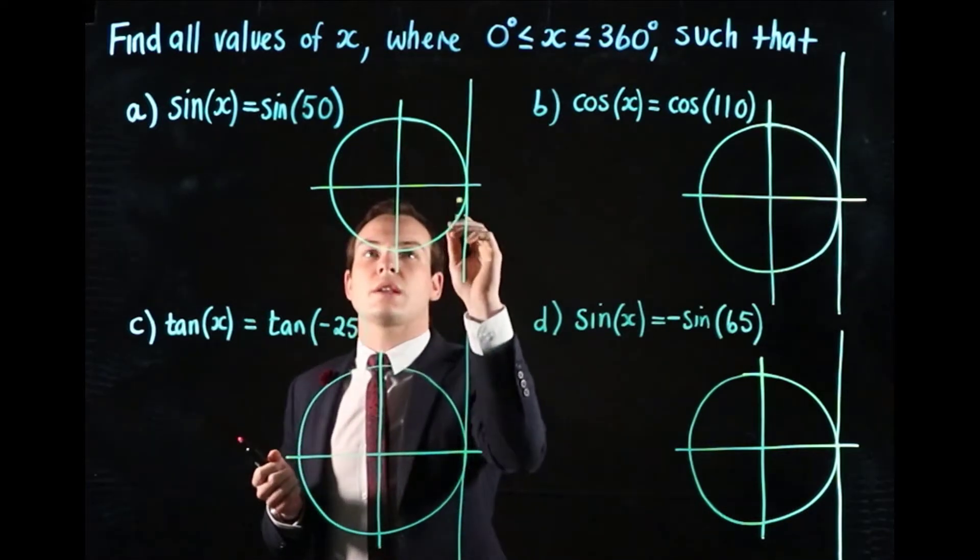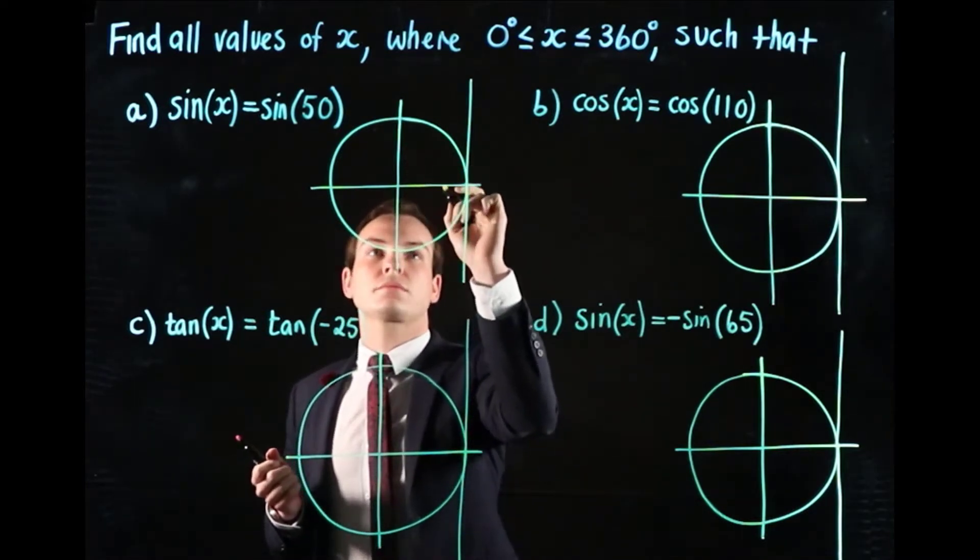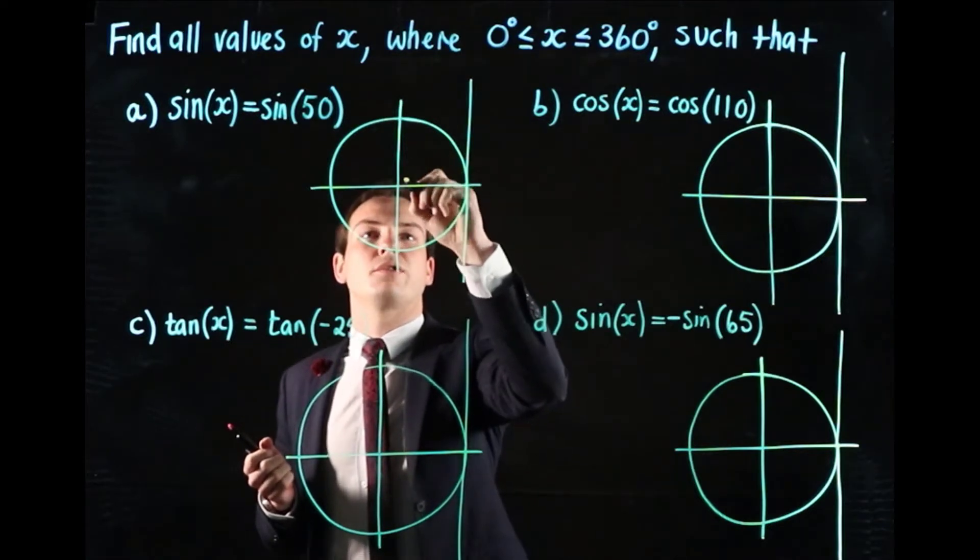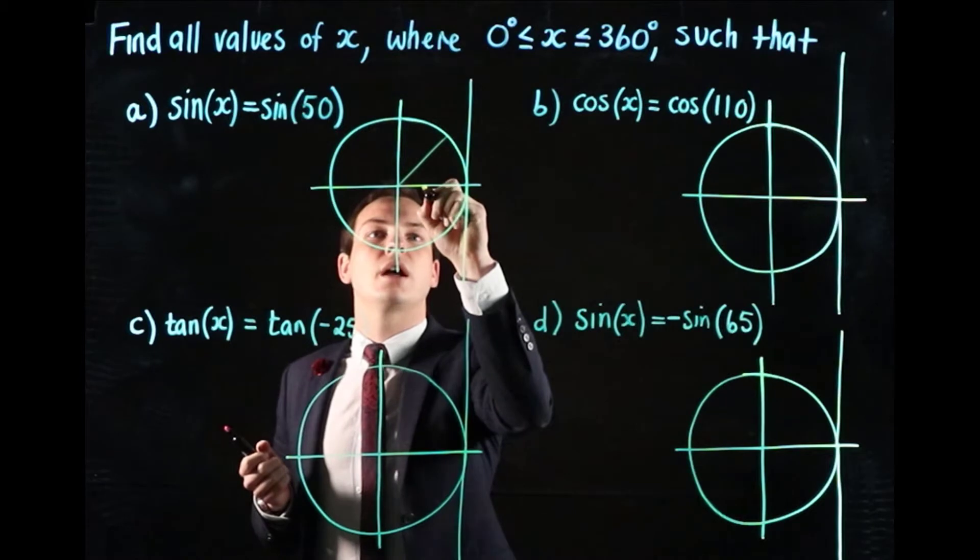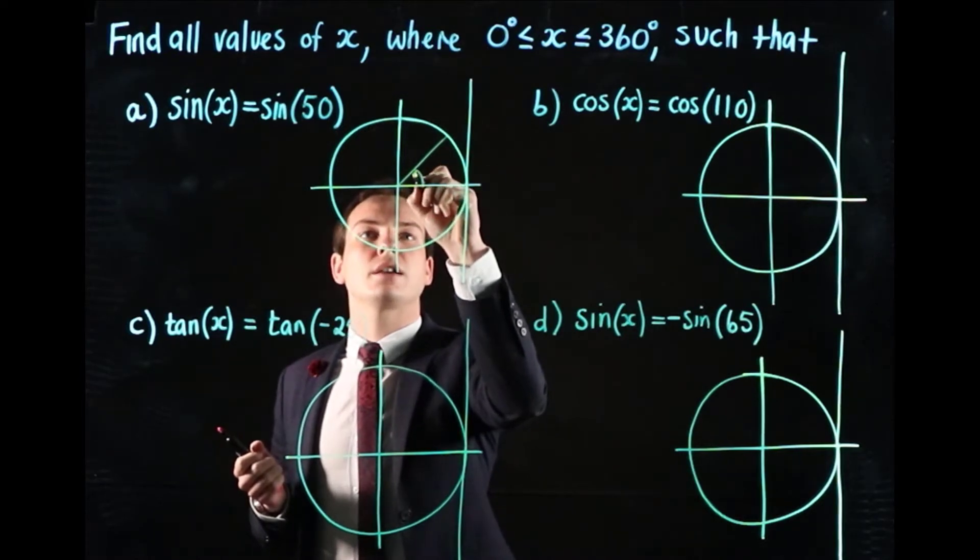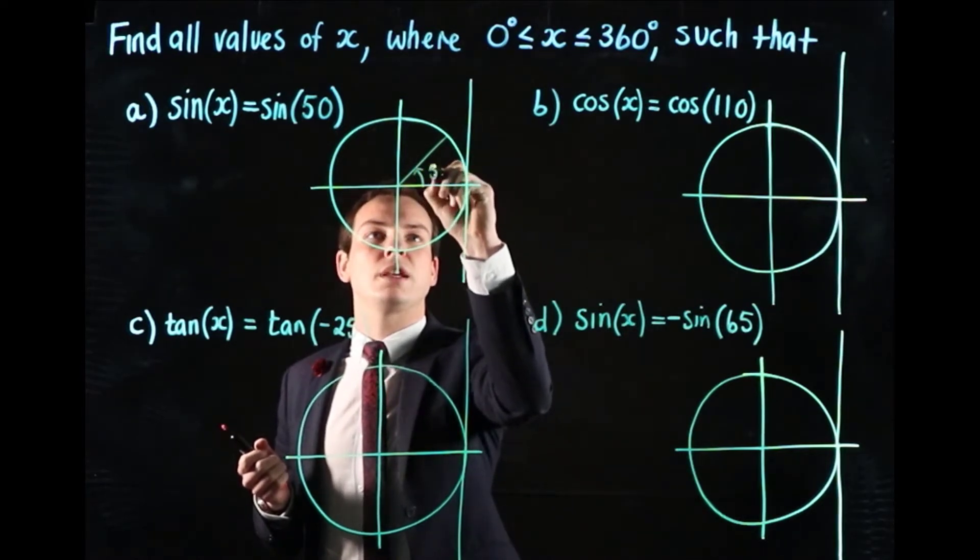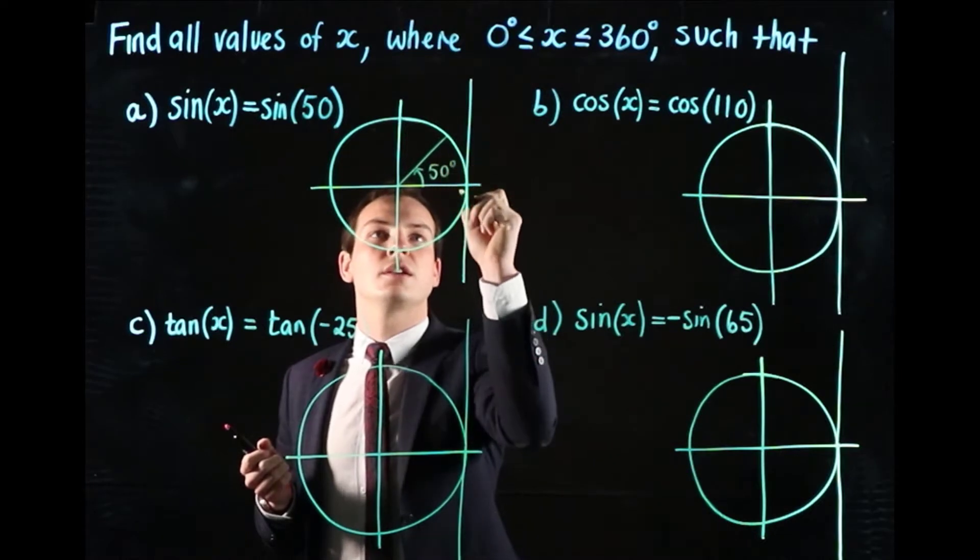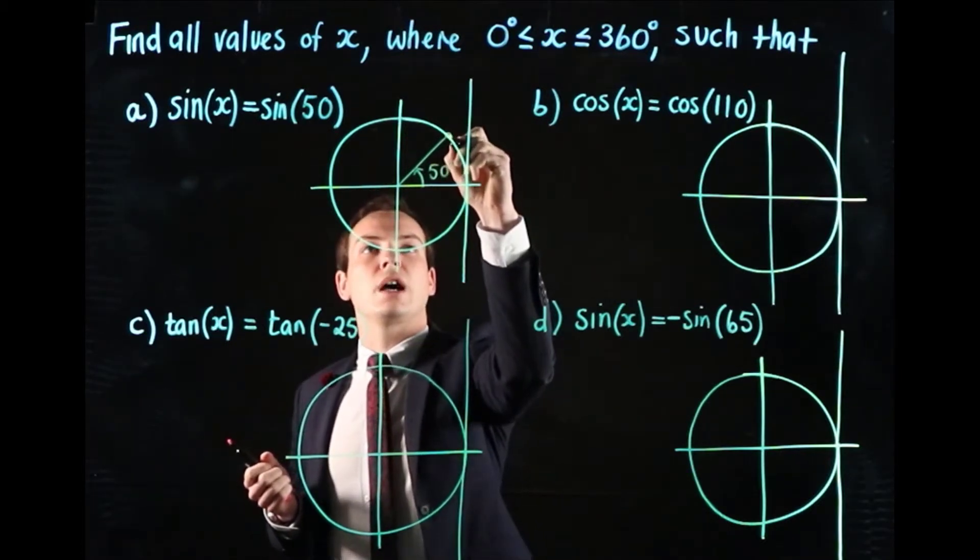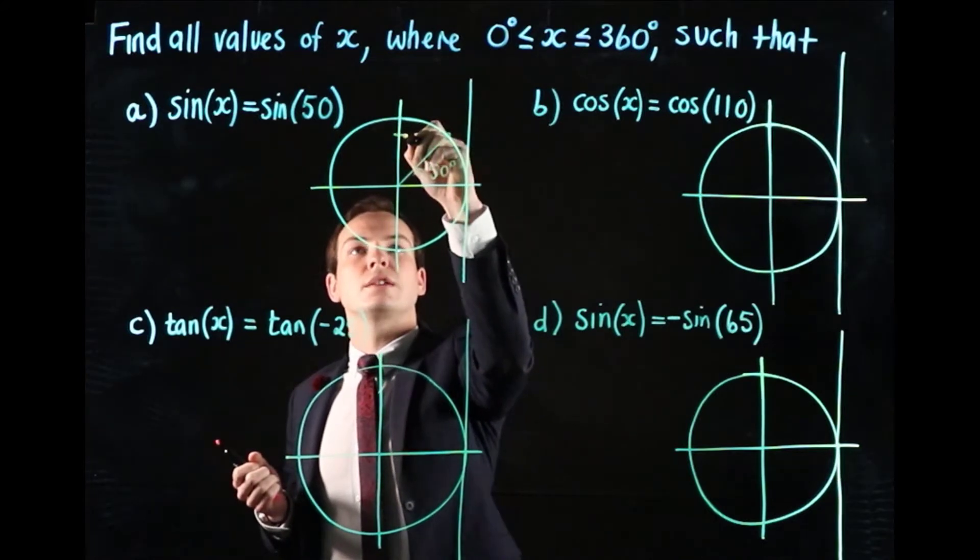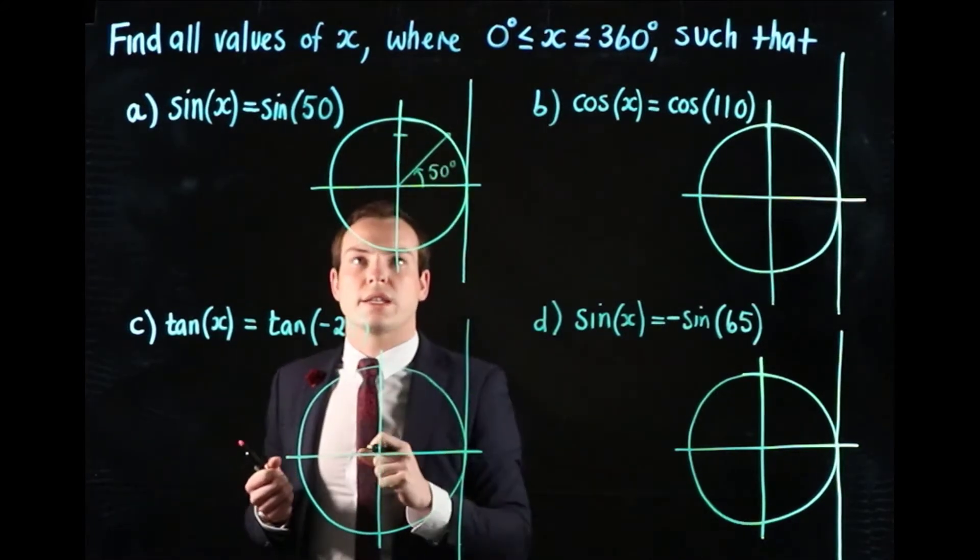50 degrees is in our first quadrant, nearly 45 degrees but a little bit bigger, so it's going to be about here, and that angle is 50 degrees. Sine is read off the y-axis, so if we look at this point here, sin of 50 is this point on the y-axis.